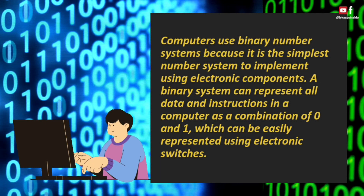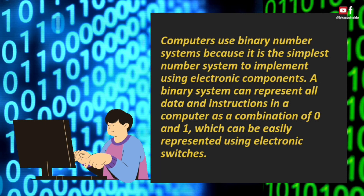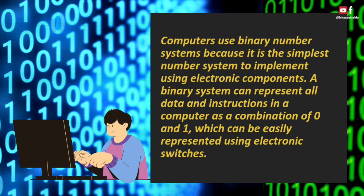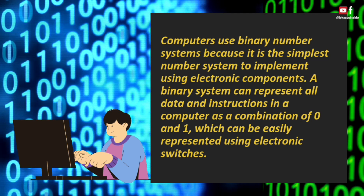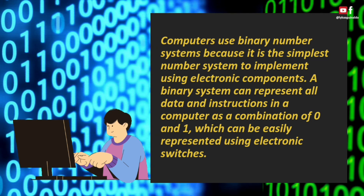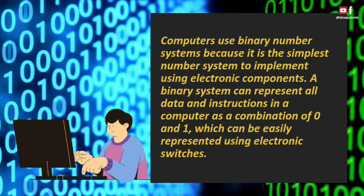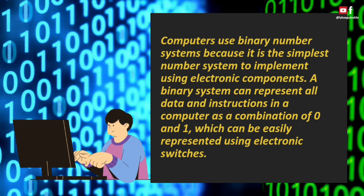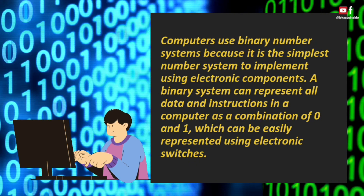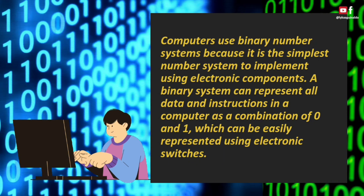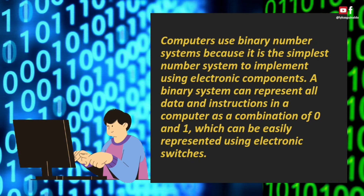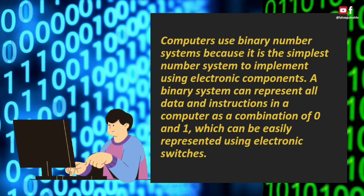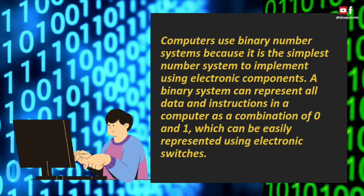Computers use binary number systems because it is the simplest number system to implement using electronic components. A binary system can represent all data and instructions in a computer as a combination of zero and one, which can be easily represented using electronic switches.